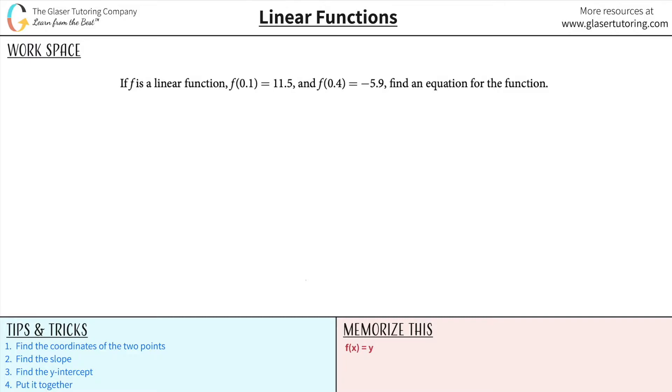If f is a linear function and f(0.1) equals 11.5 and f(0.4) equals negative 5.9, find an equation for the function.